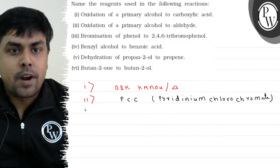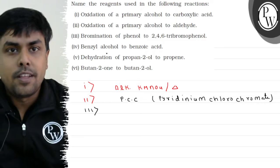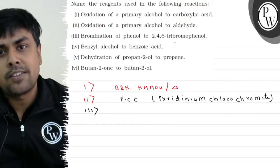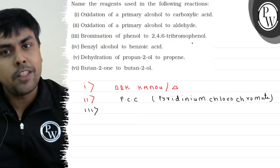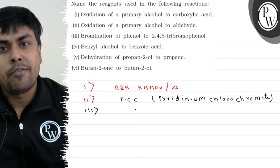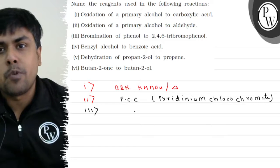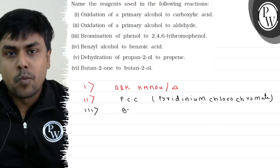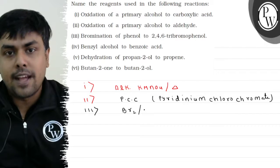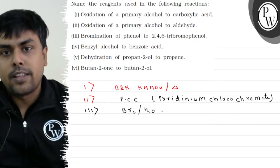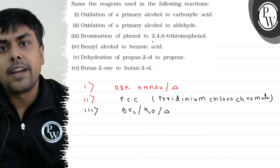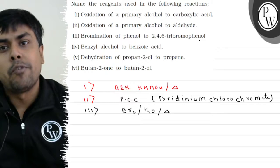Coming to part 3 of the question: Bromination of phenol to 2,4,6-tribromophenol. हमें phenol को 2,4,6-tribromophenol में convert करना है. The best reagent is bromine water. Br2-H2O को heat कर देंगे. जैसे हम heat करते हैं phenol को इस reagent के साथ, we will get 2,4,6-tribromophenol.